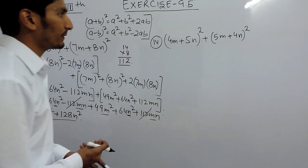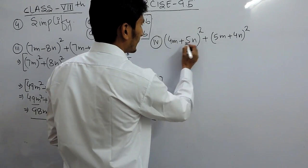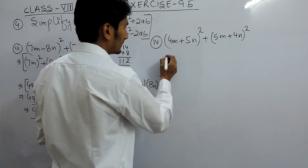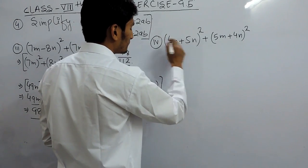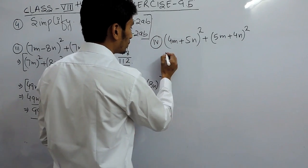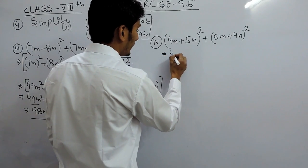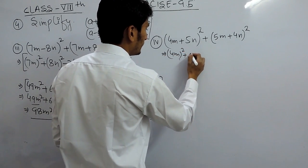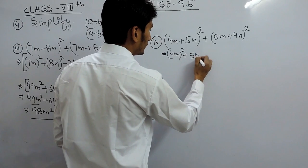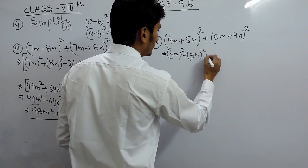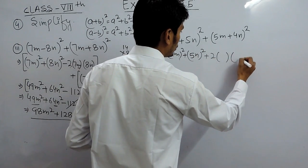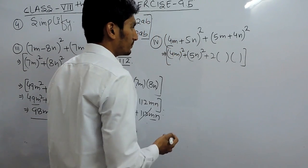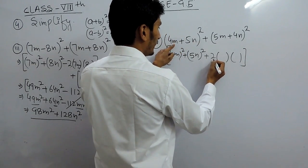Now let's solve the fourth expression. Both signs are positive so we use the identity (a + b)² = a² + b² + 2ab. For the first expression, a = 4m and b = 5n, giving us (4m)² + (5n)² + 2 × 4m × 5n.